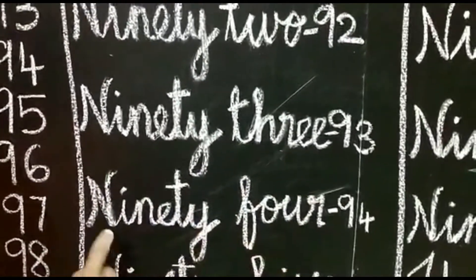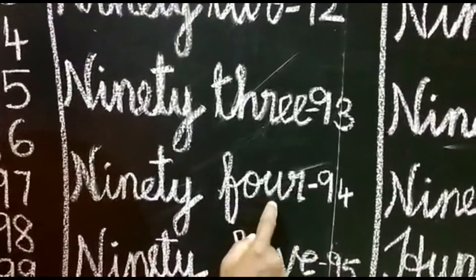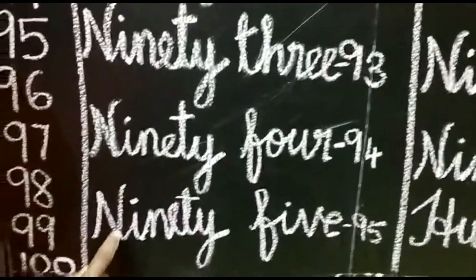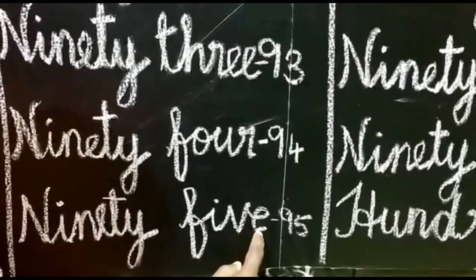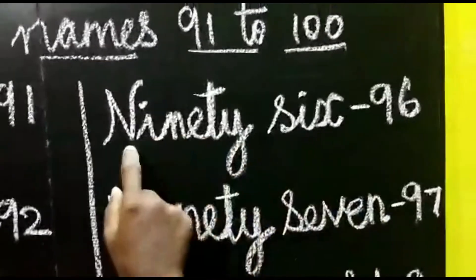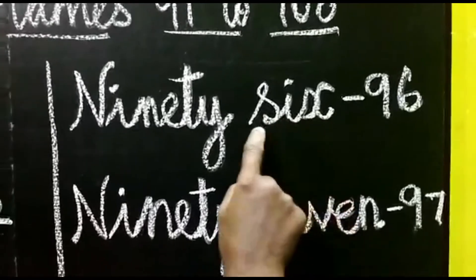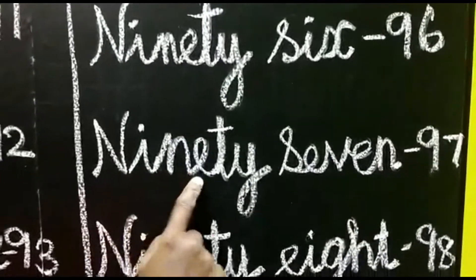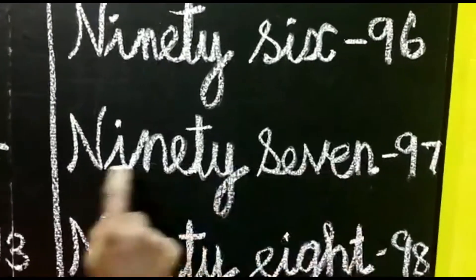94 — N-I-N-E-T-Y, F-O-U-R, 4, 94. The next number 95 — N-I-N-E-T-Y, F-I-V-E, 5, 95. Then 96 — N-I-N-E-T-Y, S-I-X, 96. Then 97 — N-I-N-E-T-Y, S-E-V-E-N, 7, 97.